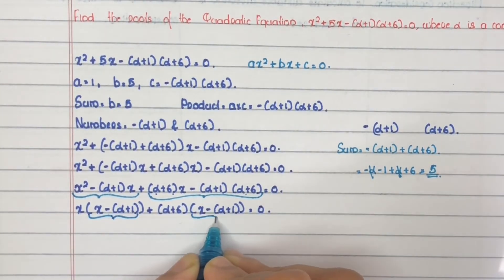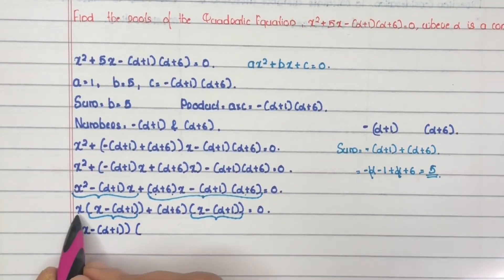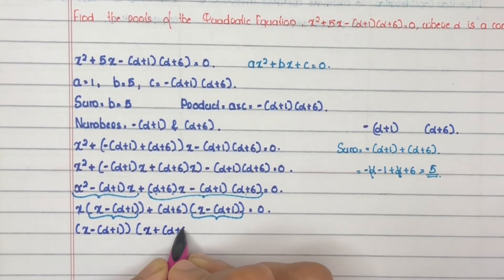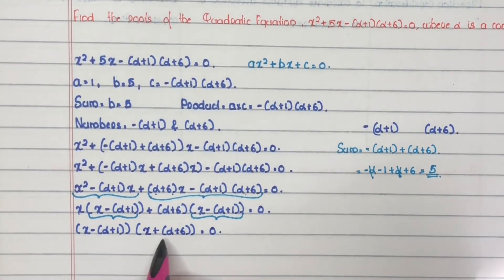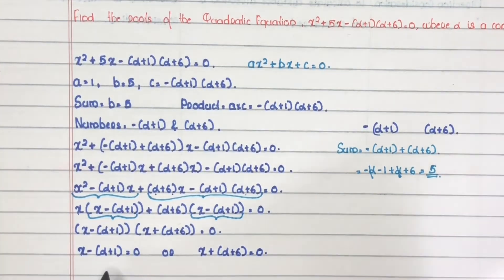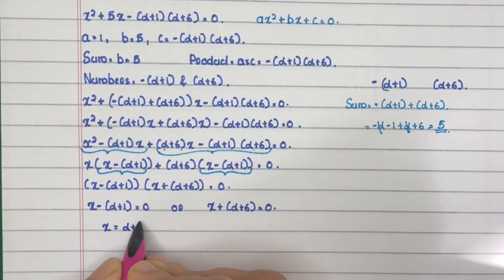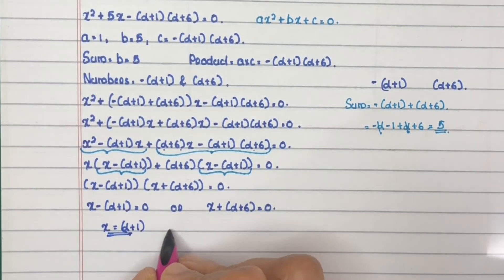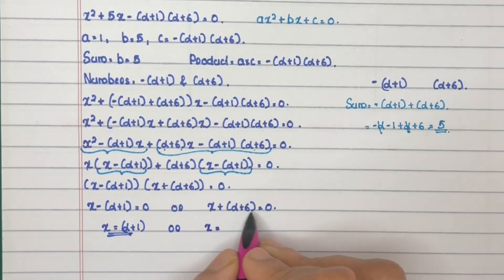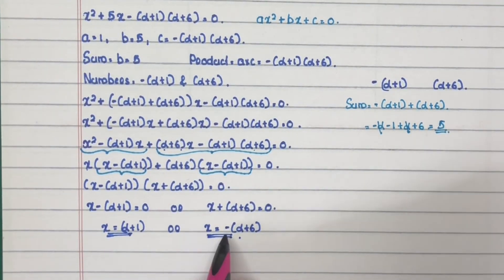Now (x minus (alpha plus 1)) is common. Take it out: (x minus (alpha plus 1))(x plus (alpha plus 6)) equals 0. So x minus (alpha plus 1) equals 0 gives x equals alpha plus 1, and x plus (alpha plus 6) equals 0 gives x equals minus(alpha plus 6). Therefore, the two roots are alpha plus 1 and minus(alpha plus 6).